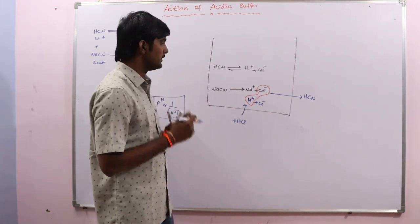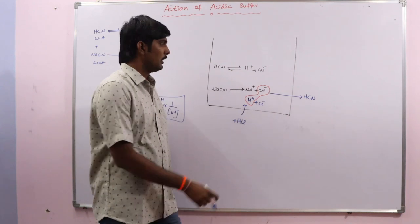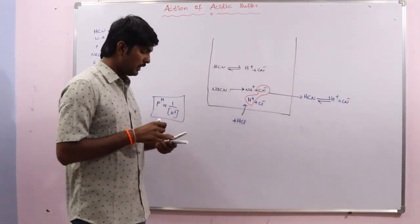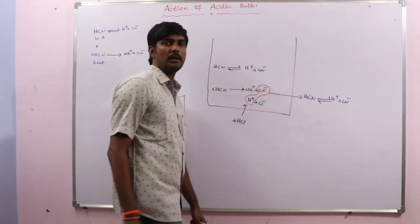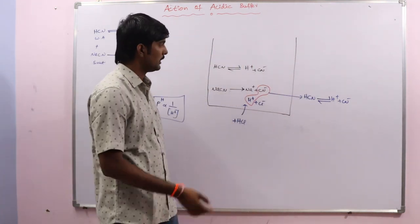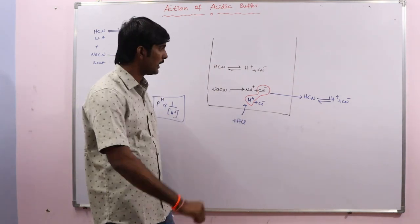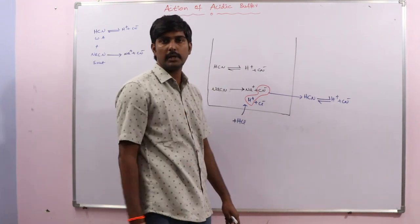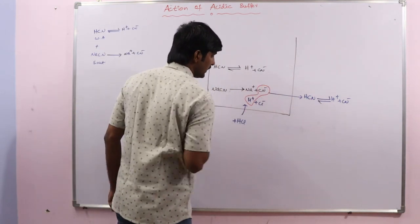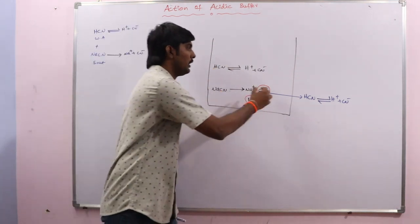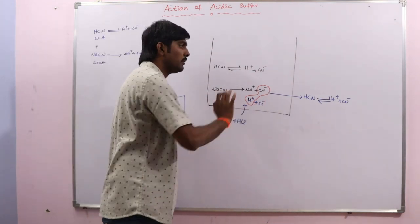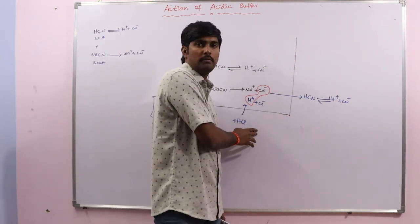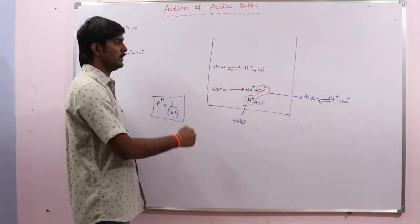One more thing also happens: the formed HCN again undergoes dissociation to give H⁺ and CN⁻. But since HCN is a weak acid, it undergoes very little ionization, and the common ion effect is also present. So HCN shows very little dissociation, meaning very few H⁺ ions are produced. Due to these two reasons, very few H⁺ ions remain free, resulting in very very little decrease in pH.